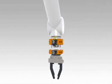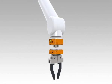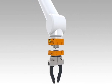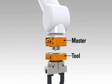ATI Industrial Automation's robotic tool changer provides flexibility to robot applications by allowing the robot to change end effectors automatically. The tool changer consists of a master plate and a tool plate.